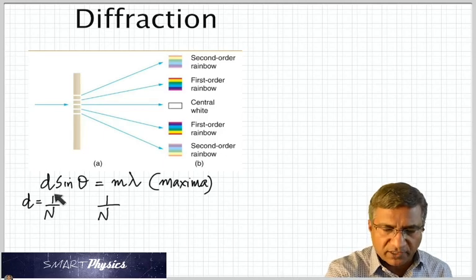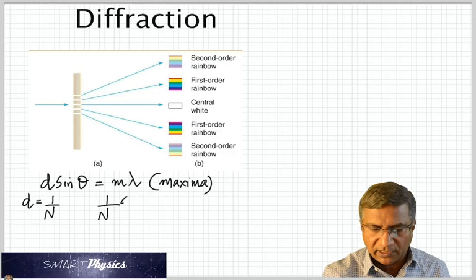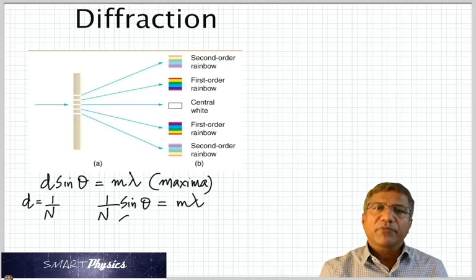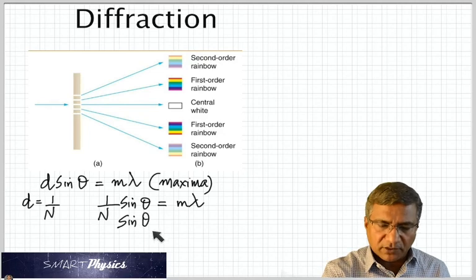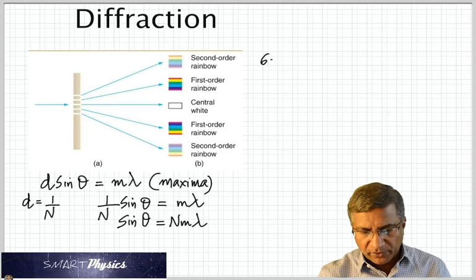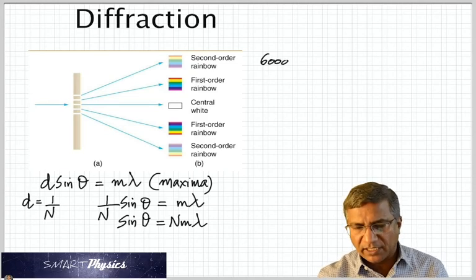So when you know that, you can substitute the value of D here as 1 by N. So you get 1 by N sin theta is equal to M lambda. And now the N can be taken to the other side. It goes to the numerator. And you get sin theta is N M lambda.